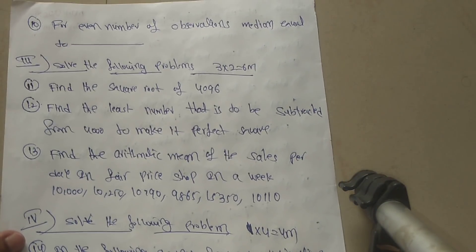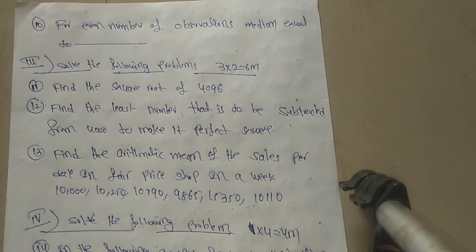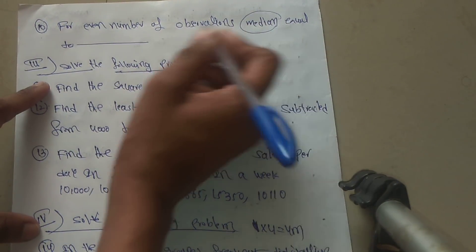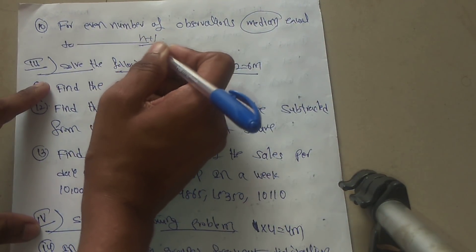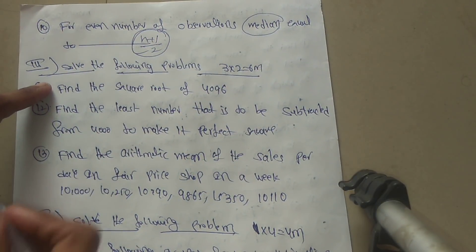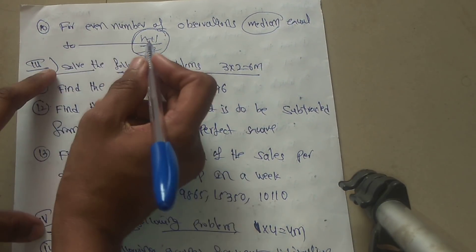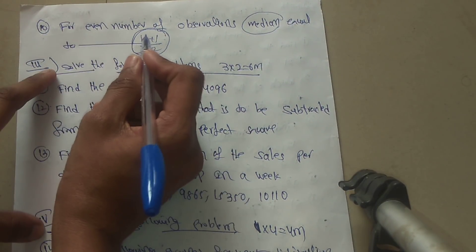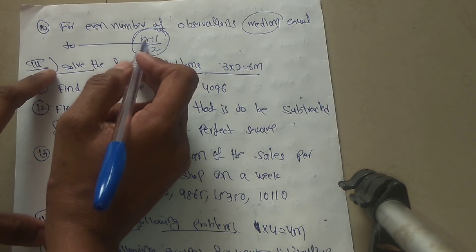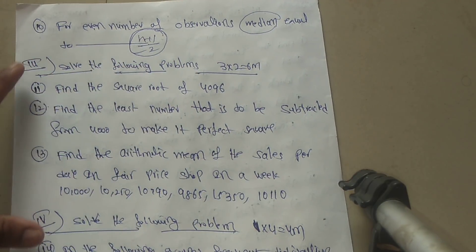Question 10: for an even number of observations, the median equals (n + 1) divided by 2. For an odd number of observations, the median position is n divided by 2. For an even number of observations, median equals (n + 1) by 2.